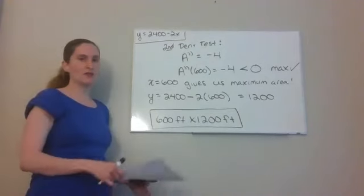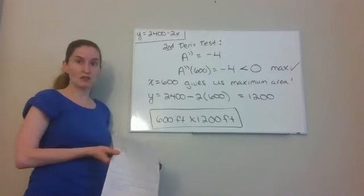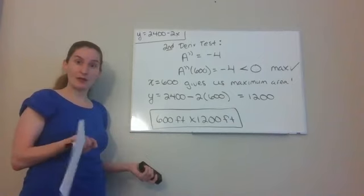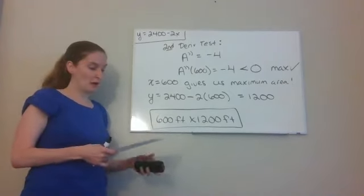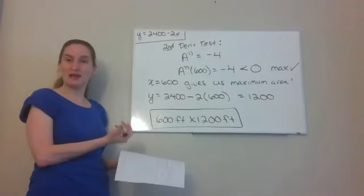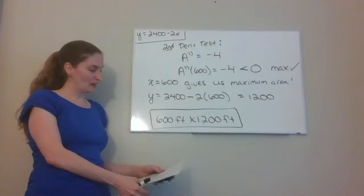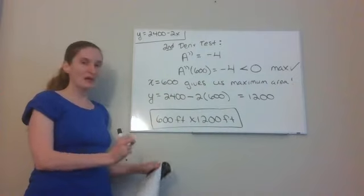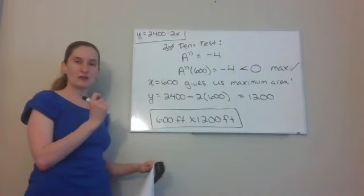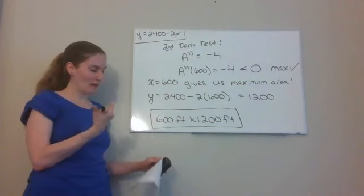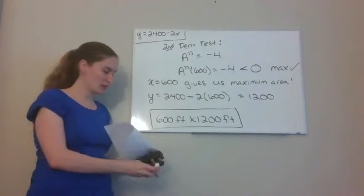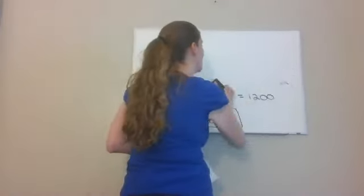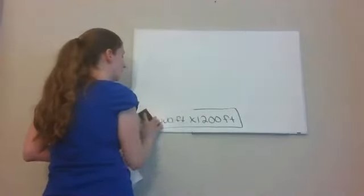That's how you find the maximum in a two-dimensional rectangle situation using the perimeter to help along the way. We can also do this with three-dimensional objects. Our next example is going to minimize the cost to produce a can that holds a certain amount of volume.